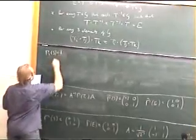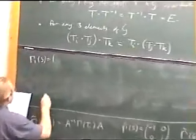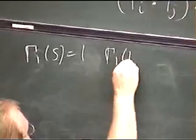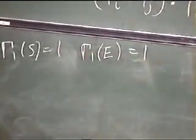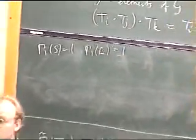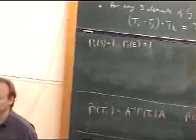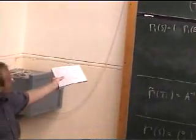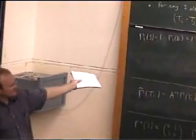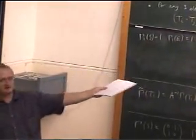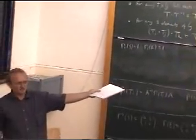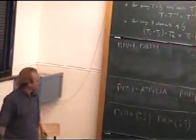Gamma 1 of S is equal to 1, and gamma 1 of E is equal to 1. Our composition law is just multiplication between numbers. So if you take those two elements, you can verify that they satisfy the group multiplication table.